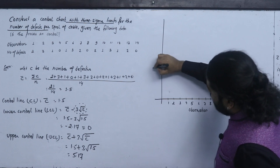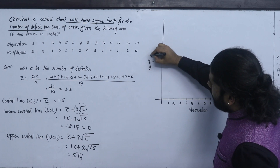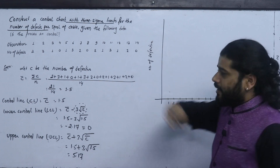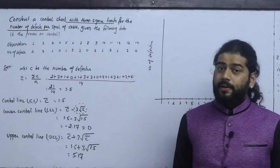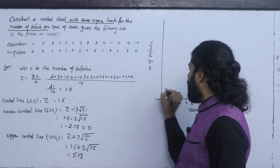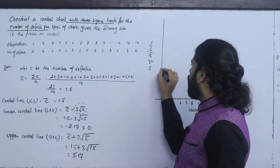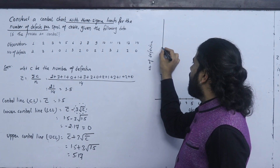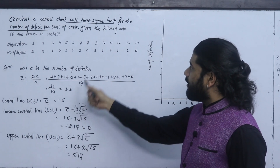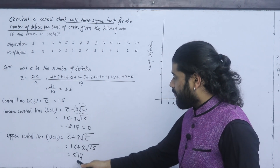Now this is the number of defectives. The fraction of defective values are: 1, 2, 3, 4, 5, 6, 7, 8, 9, 10. We have the number of defectives with c-bar at 1.5 and UCL at 5.17.